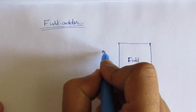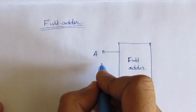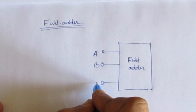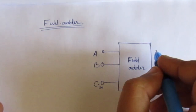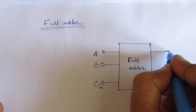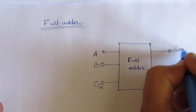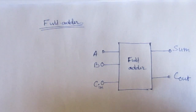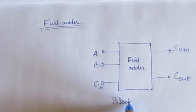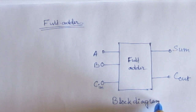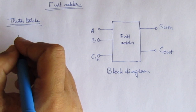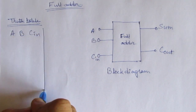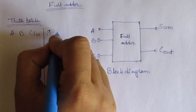Here we have three inputs: A, B, and a carry-in from the previous stage, C-in. We have two outputs — one is the sum of the three inputs, and here we will get the carry-out output. So this is the block diagram of the full adder. We have three inputs, A, B, and carry-in, and two outputs: sum and carry-out.